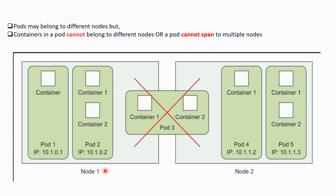In this picture you can see what is not possible in terms of pods and containers. Pods may belong to different nodes — here you have worker node 1 and worker node 2. Inside the worker nodes, pods are running; every pod has its own IP address and at least one container working inside it. You can see single container pods and multi-container pods. Importantly, containers in a pod cannot belong to different nodes — a pod cannot span multiple nodes. This is simply not possible.